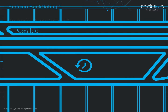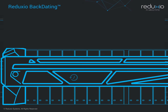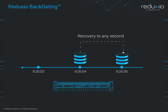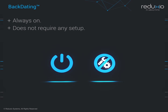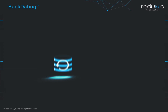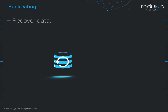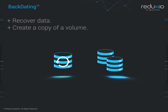Reduxio's backdating technology, integrated into our flash storage systems, provides the ability to go back in time at one-second granularity for any volume. Backdating is always on and does not require any setup. Now let's look at how you would use backdating to recover data or create a copy of a volume from a given point in time.